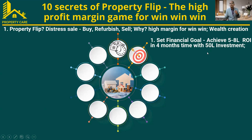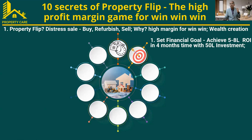Before investing in this kind of property, you should set a good financial goal — why you want to invest — so that you will be achieving it. For example, achieving five to eight lakhs return on investment in four months' time with the help of a 50-lakh investment. He has 50 lakhs in his bank account, wants to invest in a property, and get a return of five to eight lakhs in three to four months' time. This is the financial goal, and he is getting into this flipping property.